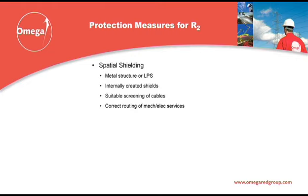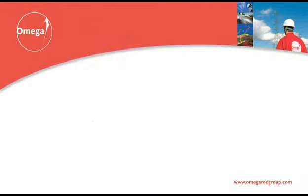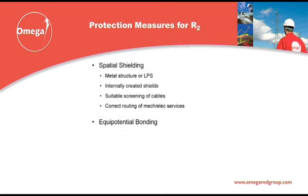The limiting effect of these measures is taken into account as part of the risk assessment process, and it is important that accurate building service information is provided to the engineer undertaking the risk assessment so that it can be appropriately considered. The choice and layout of bonding systems are crucial to the protection of electronic equipment. Each zone needs to ensure equipotentialisation within it by the provision of an earth bar at the entry point to each zone.